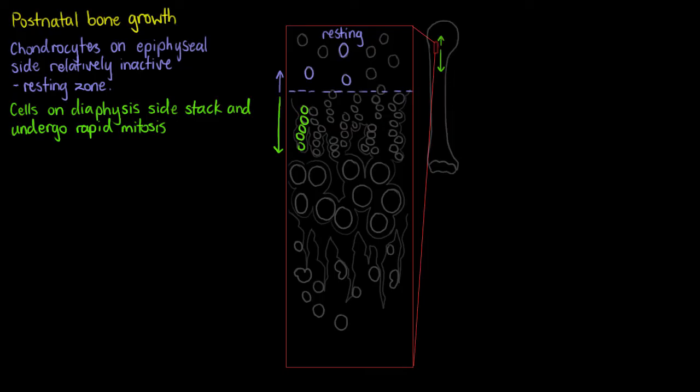This is going to result in us getting taller as we age. The diaphysis is being pushed away from the epiphysis, and this zone that all of this is occurring is going to be called our proliferation zone. Our proliferation zone in long bone growth is going to be the first active area.